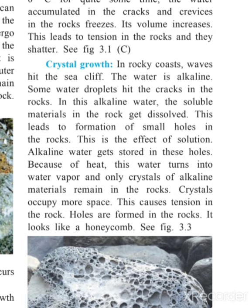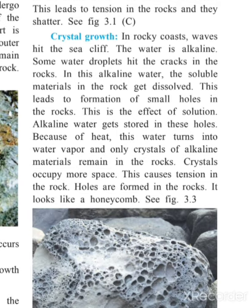The third example is crystal growth. In a rocky coast, waves hit the sea cliff. The water is alkaline, and some water droplets hit the cracks in the rocks. The soluble material in the rock gets dissolved in this alkaline water. Crystal growth is about when seawater sits on the rock for some time and the rock starts dissolving because of the alkaline water, and slowly the process begins. This is the third example — crystal growth.